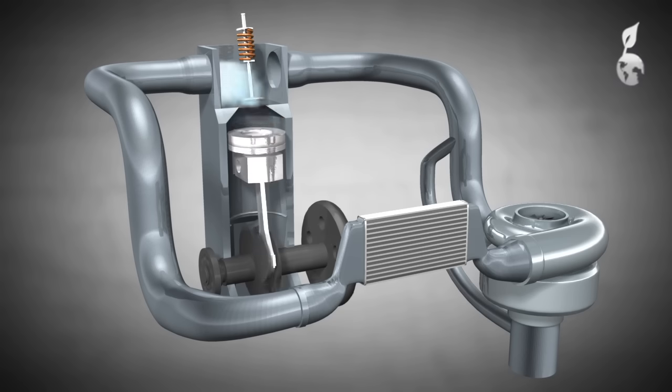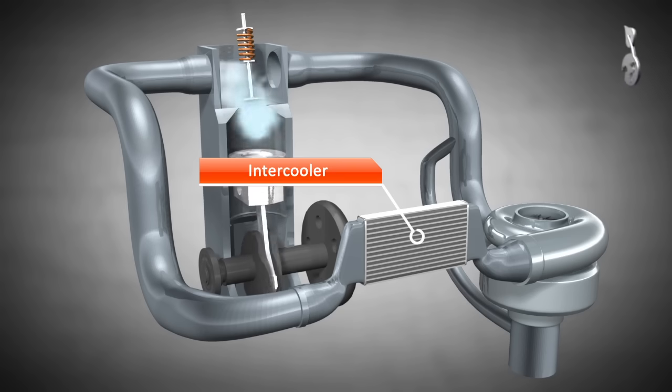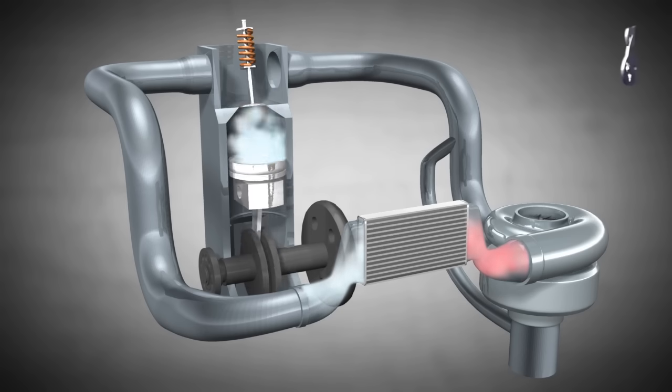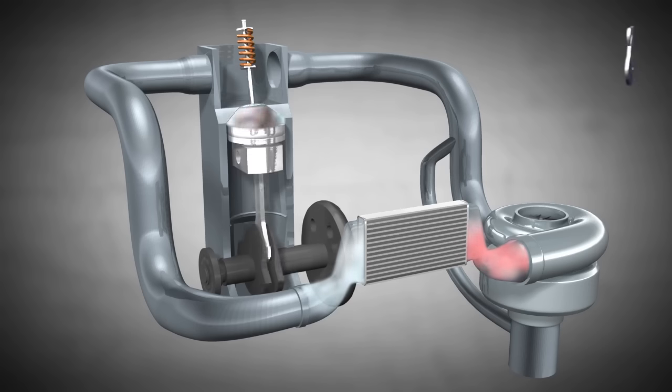We need, for example, an intercooler because the air heats up when it's compressed. So, the intercooler will cool down the hot air coming from the compressor, ensuring that more oxygen reaches the engine. That makes the engine much more efficient.